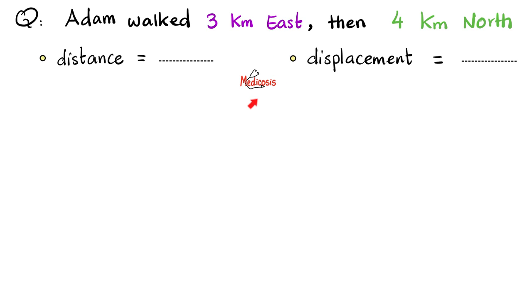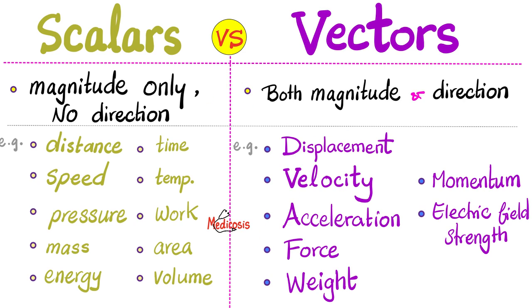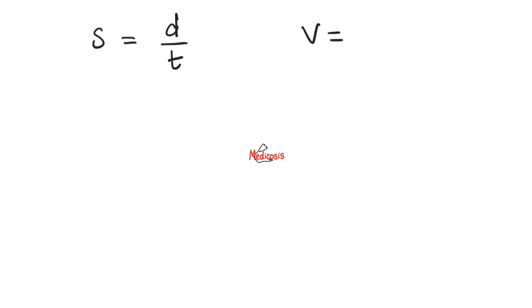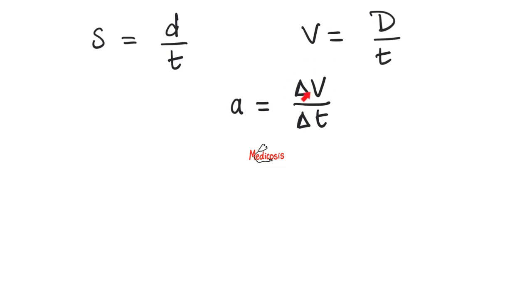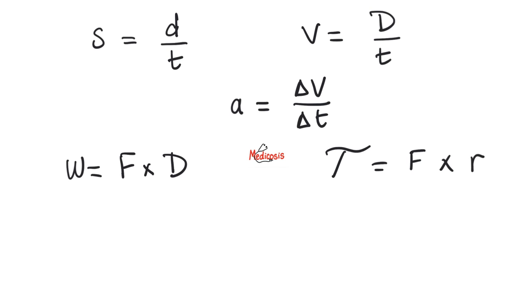We'll also review some trigonometry functions in the next video. Please take a moment to pause and review. Mnemonic: speed with S is scalar, and mass — double S — is scalar. But velocity with V is vector. At the end of each video I'll give you equations to memorize. Speed equals distance over time; velocity equals displacement over time — scalar, vector, scalar, vector. Acceleration is the change in velocity over change in time — vector over scalar gives a vector. Work equals force (vector) times displacement (vector), and work is a scalar. But torque is force multiplied by the lever arm or position vector — vector times vector — and torque is a vector.